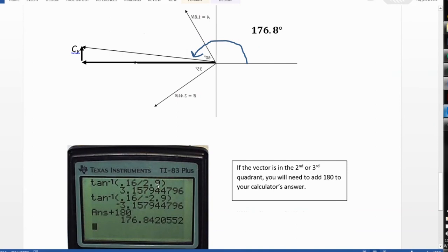The first calculation you see here is the calculation for the previous problem, where both the x and the y components were positive. Now, my x component is negative, and you see when I take the inverse tangent of this ratio, I get negative 3.1, which is an angle that points into the fourth quadrant. And certainly, that is not where this vector is pointing.